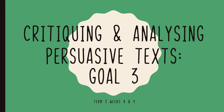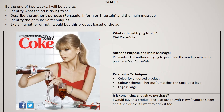Let's have a look at goal three together and work through my worked example, for you then to have a go at independently. By the end of two weeks, I will be able to: identify what the ad is trying to sell; describe the author's purpose — that's PIE: persuade, inform, or entertain; identify the main message; and identify the persuasive techniques, which can be quite tricky but actually really fun when you know what you're looking for.